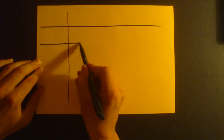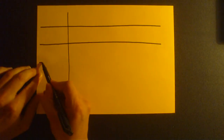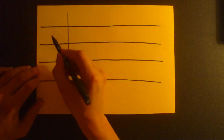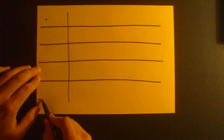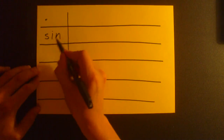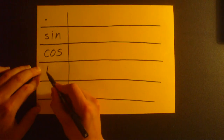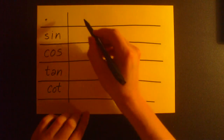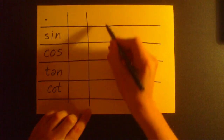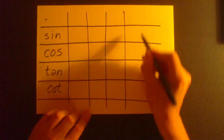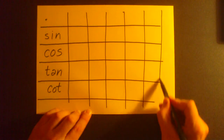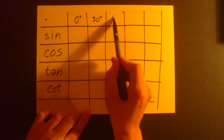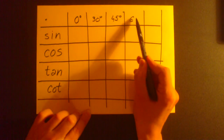In the rows we will put values of sine, cosine, tangent and cotangent. In the columns we will put degrees: zero degrees, 30, 45, 60 and 90.